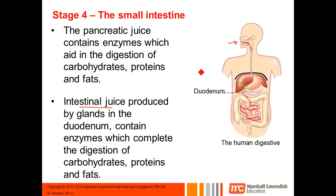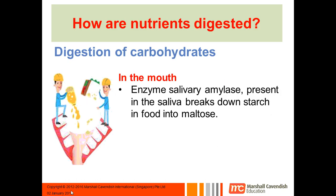Eventually they break down into simple sugars, amino acids, fatty acids, and glycerol, which your body can absorb. It doesn't go straight from carbohydrates to simple sugars — it breaks down to a disaccharide first, and then right down to monosaccharides. We'll stop there, and next we'll go into how the different nutrients are actually digested one by one.